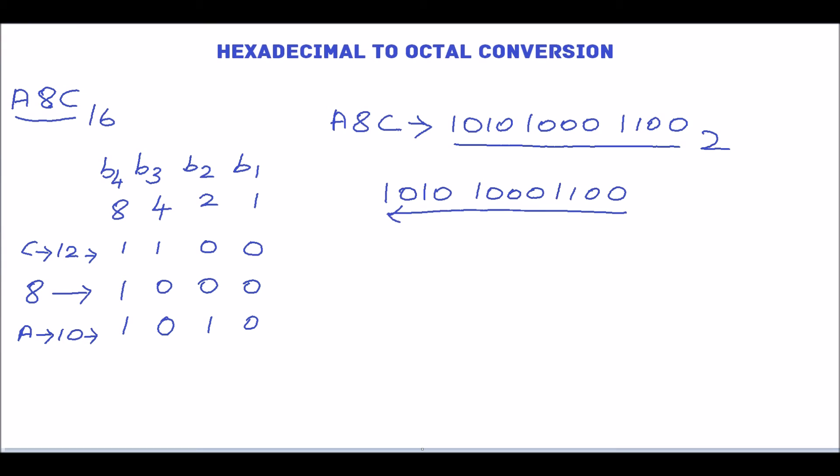So the first group is 100, the second group is 001, the third group is 010, and the fourth group is 101.